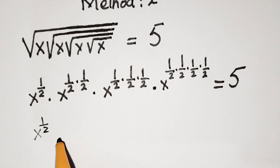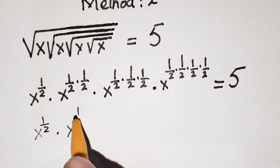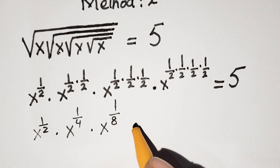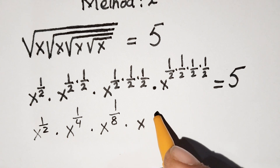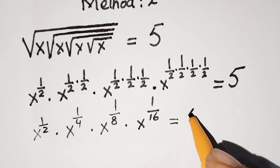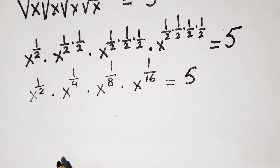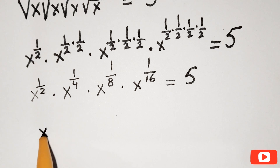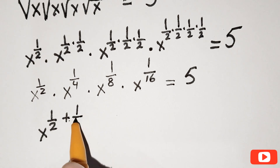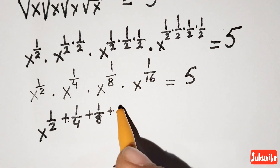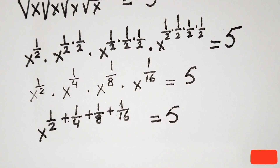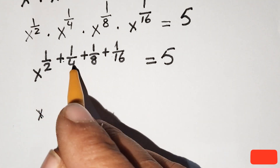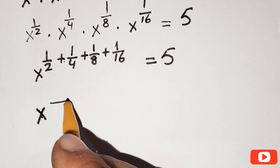So we have x to the power 1 over 2, times x to the power 1 over 4, times x to the power 1 over 8, times x to the power 1 over 16, all equal to 5. Since the bases are the same, by the power rule we can add the exponents: x to the power of 1 over 2 plus 1 over 4 plus 1 over 8 plus 1 over 16 equals 5.